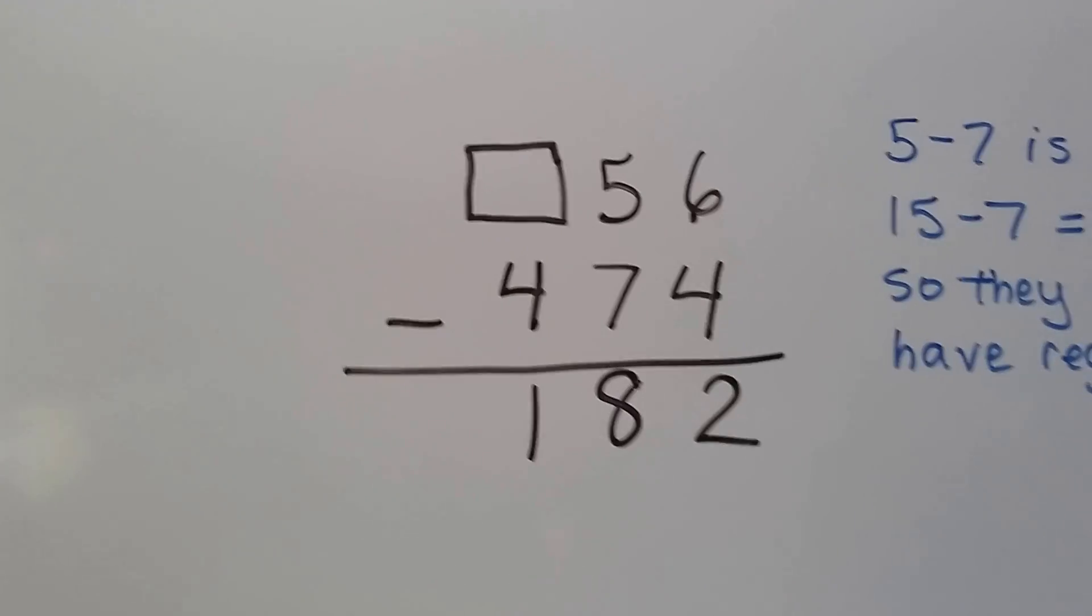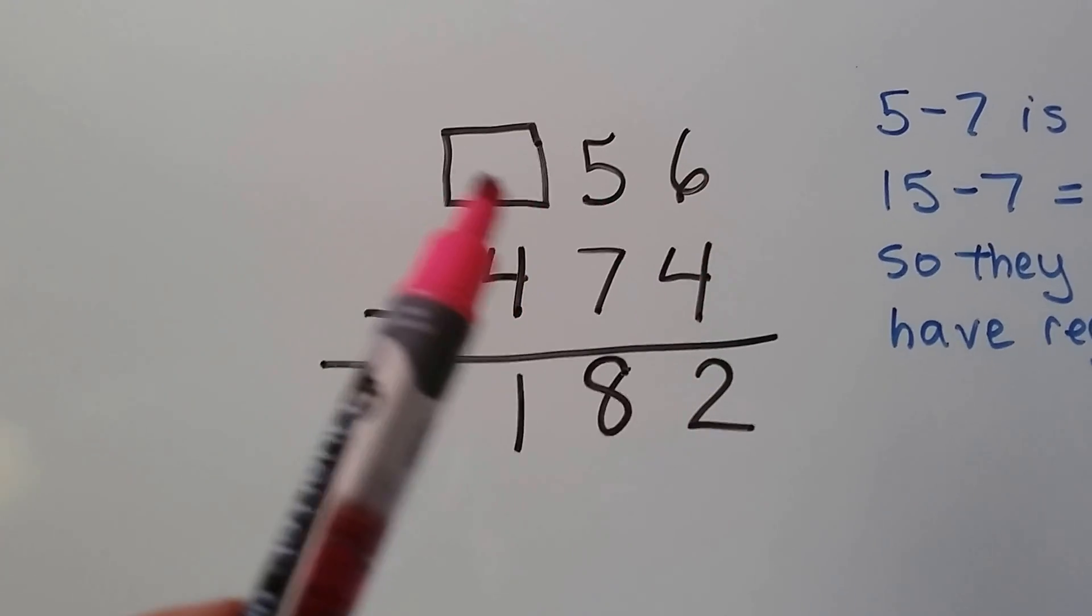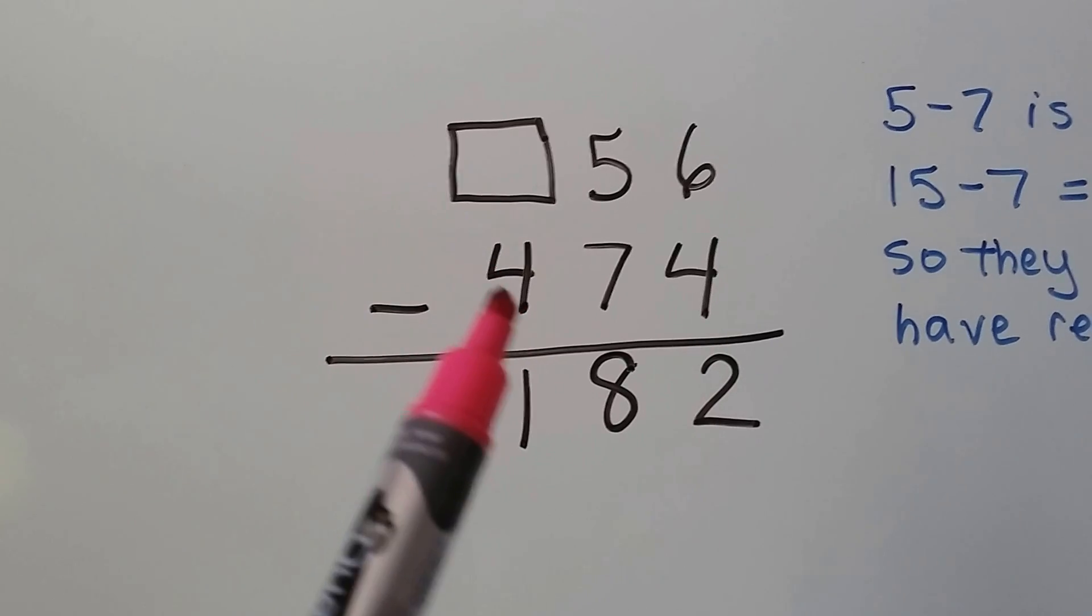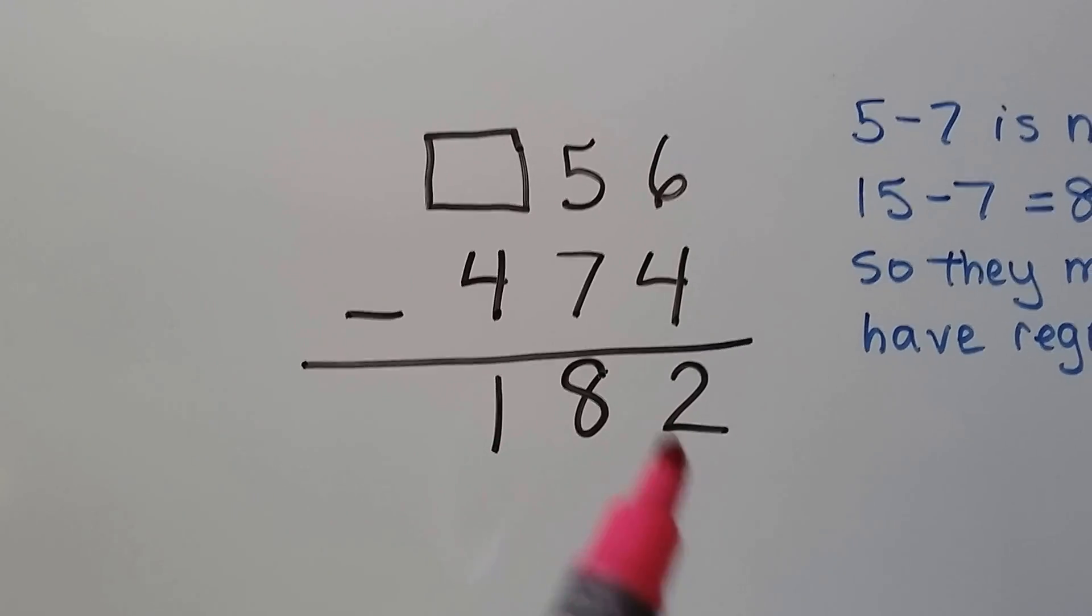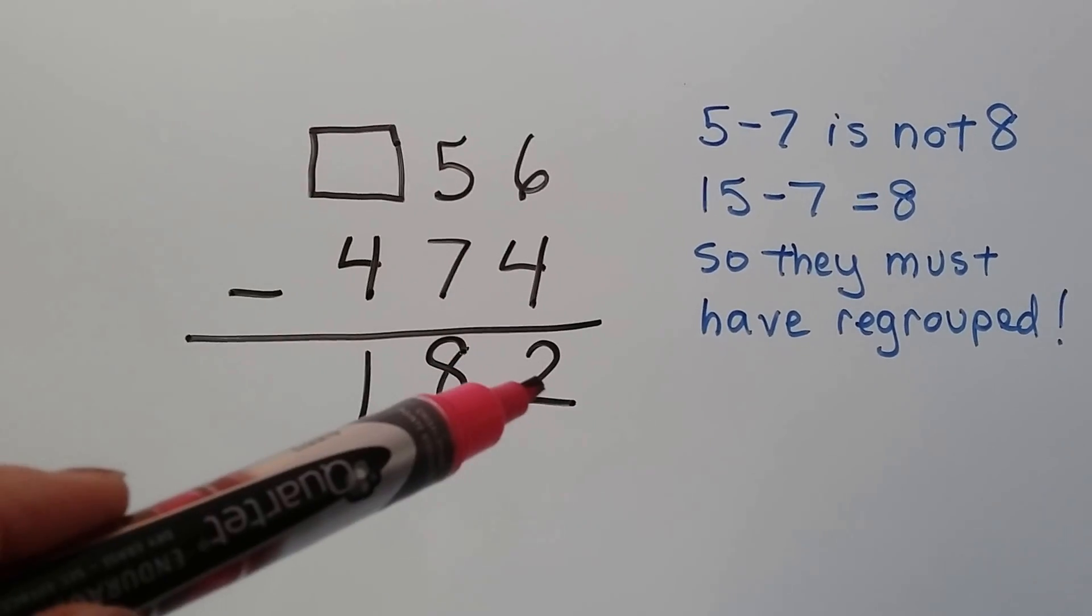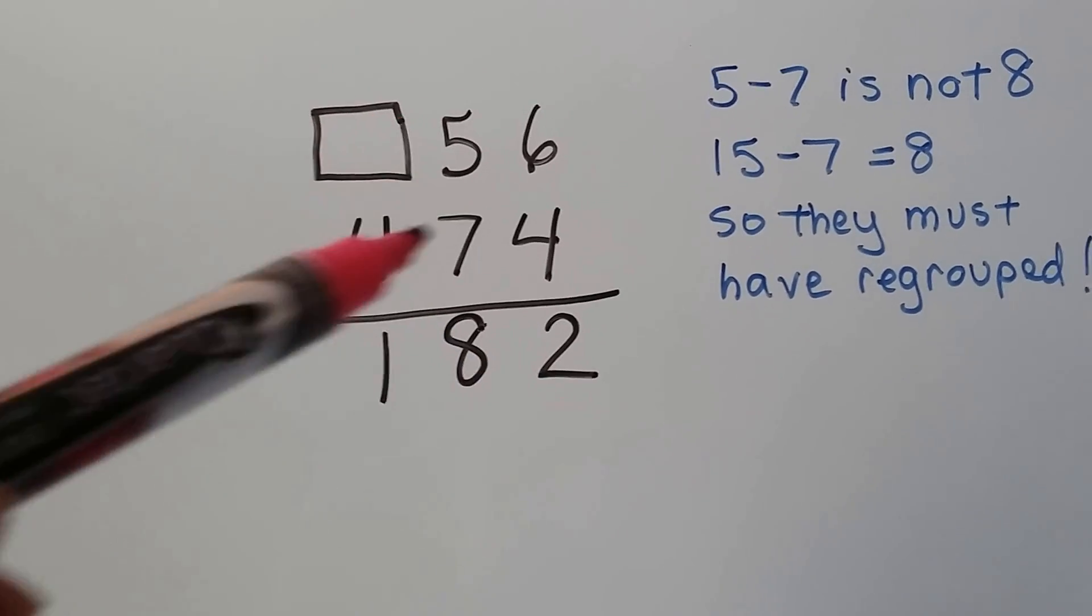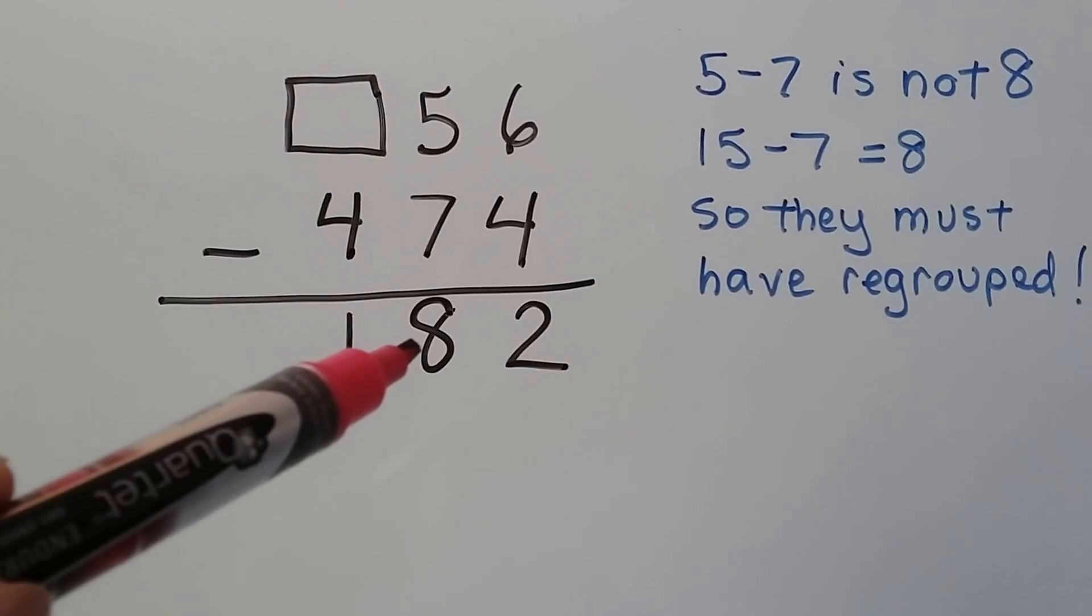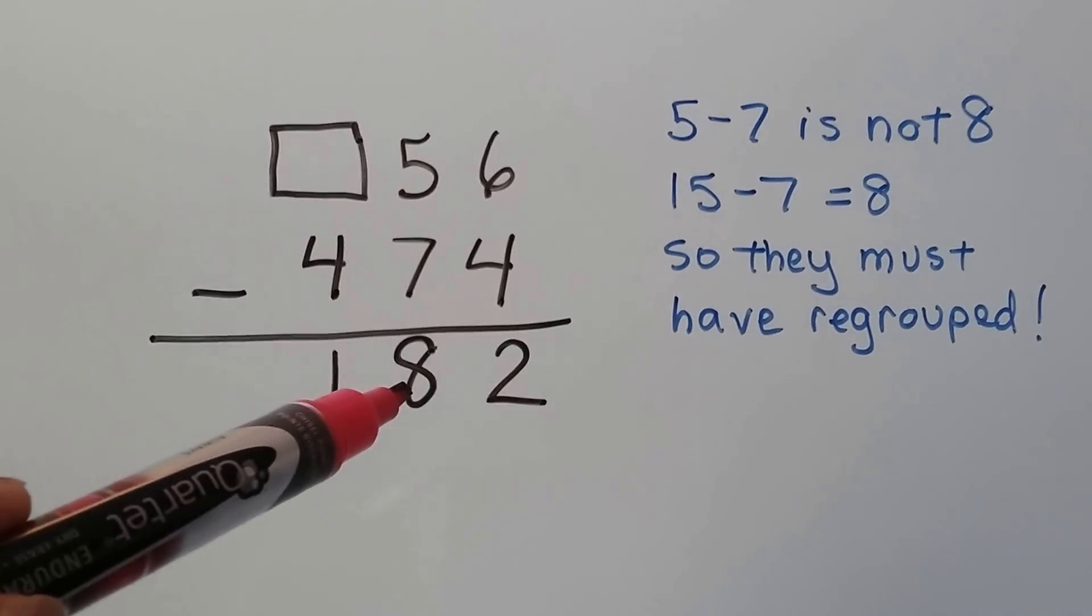Look at this one. We have something 56. It's a three-digit number, and we're taking away 474. And it's going to equal 182. Well, 6 minus 4 is 2. That's okay. But 5 minus 7 is not an 8. 15 minus 7 is 8.